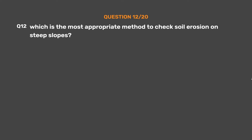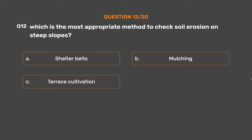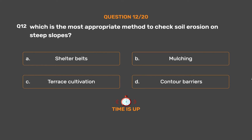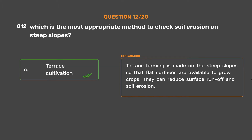Question No. 12. Which is the most appropriate method to check soil erosion on steep slopes? Option A: Shelter belts. Option B: Mulching. Option C: Terrace cultivation. Option D: Contour barriers. The correct answer is Option C: Terrace cultivation. Terrace farming is made on steep slopes so that flat surfaces are available to grow crops. They can reduce surface runoff and soil erosion.